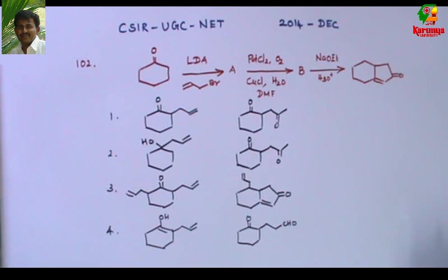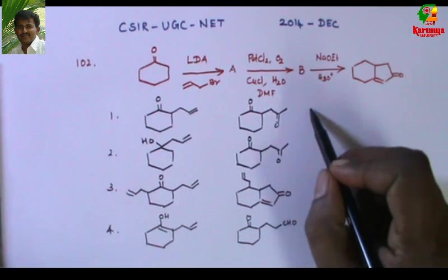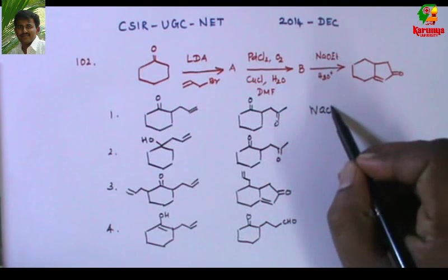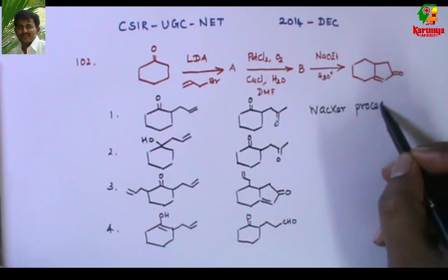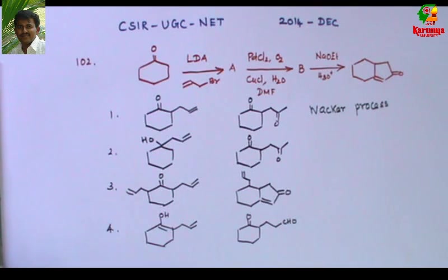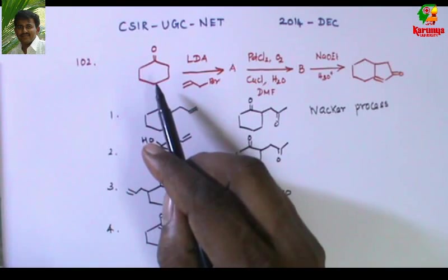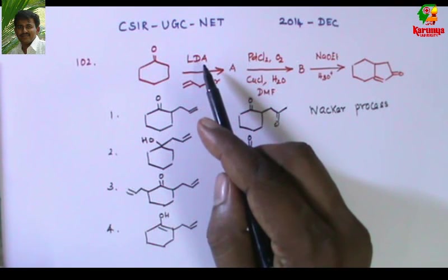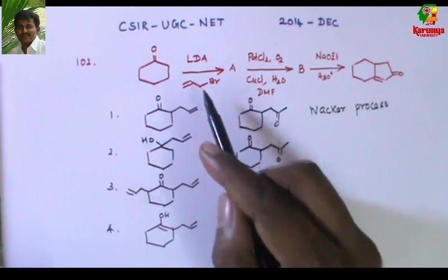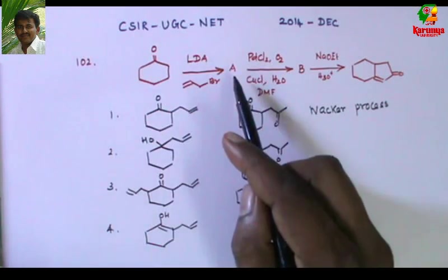Today I am going to solve a problem on the Wacker process. You can find this problem in CSUN8 exam, December 2014. The problem states: when cyclohexanone is treated with LDA (lithium diisopropylamide) and allyl bromide, it gives compound A.